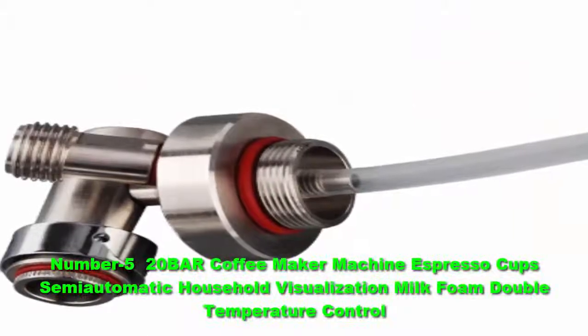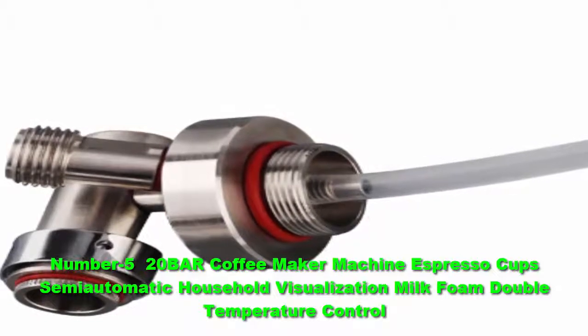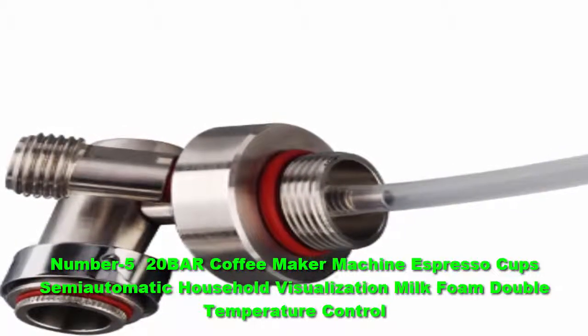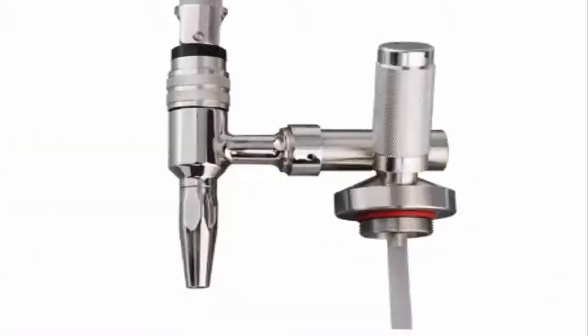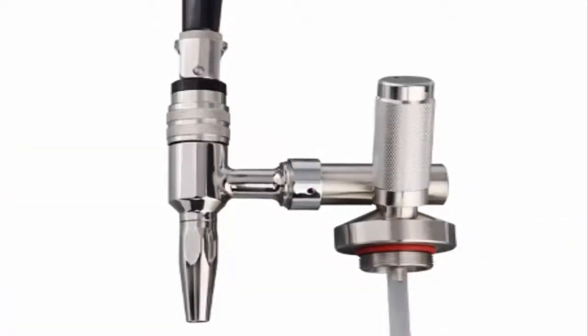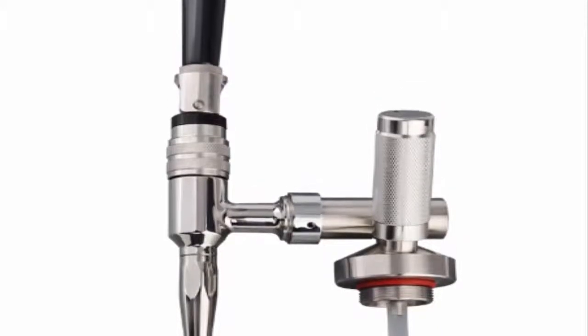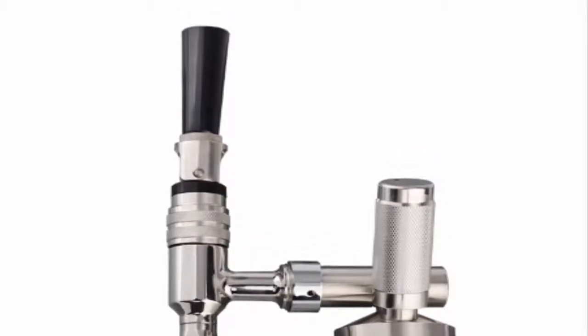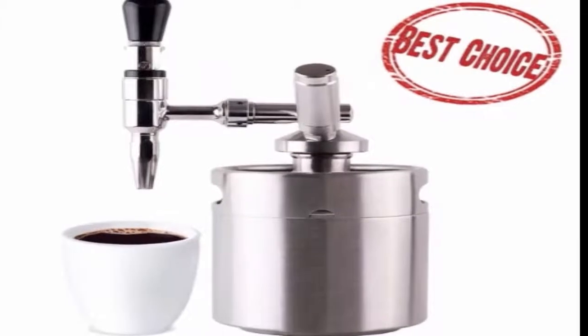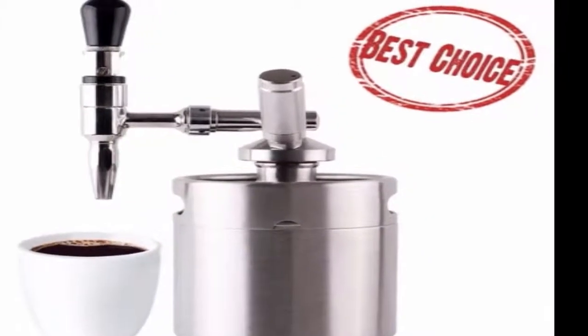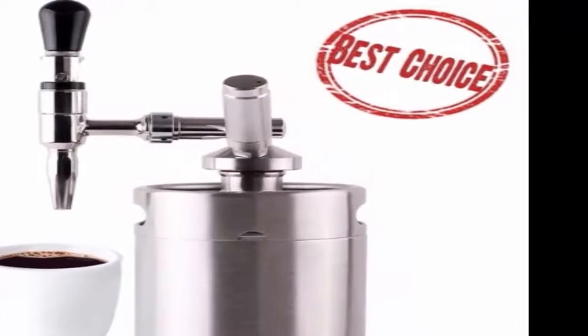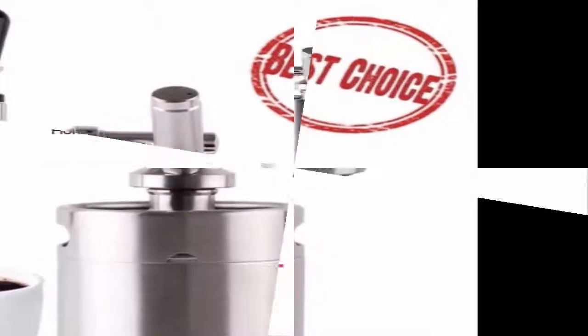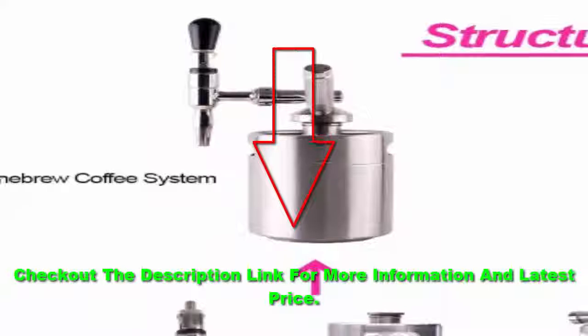Number 5 20 Bar Coffee Maker Machine Espresso Cups Semi-Automatic Household Visualization Milk Foam Double Temperature Control. If you want to make cold brew coffee on the go, this one-quart brewer can go with you. It makes four servings of coffee and has an airtight, leak-proof lid, so you can take it along without worry about spilling. The container is made from BPA-free plastic that won't shatter, and all parts are dishwasher safe. For home use, the container is sized to fit in most refrigerator doors. Brewing can be done overnight, or let the grounds steep for up to 36 hours in the refrigerator. Since this is a larger container, it doesn't double as a to-go mug, but it's ideal if you're sharing your cold brew. Check out the description link for more information and latest price.